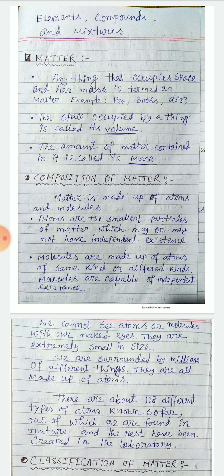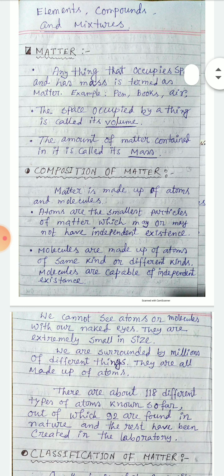For example, pen, pencil, books, air, table, chair — all are matter that has mass and occupies space. The space occupied by a matter is called its volume, and the amount of matter contained in anything is called its mass.